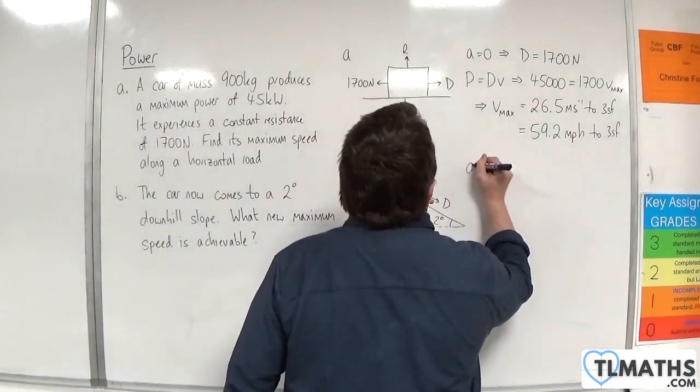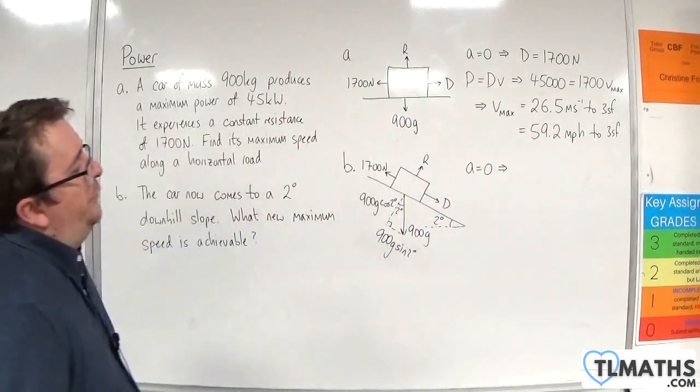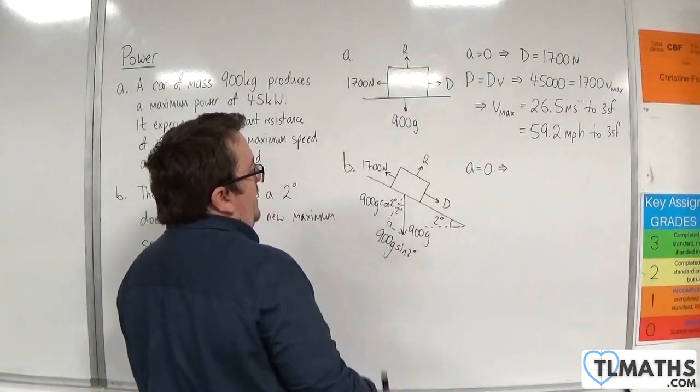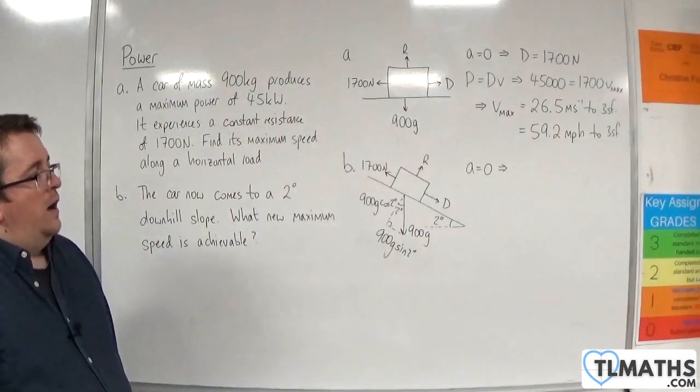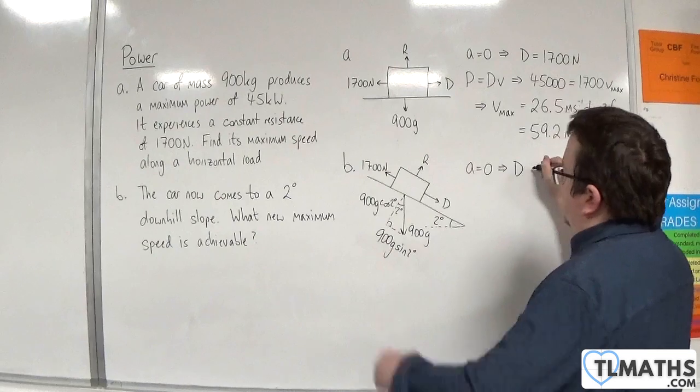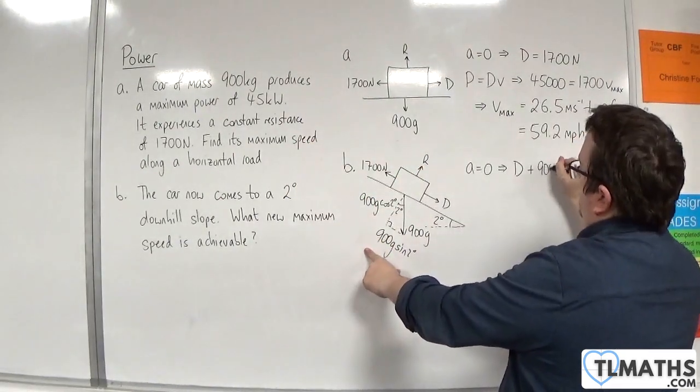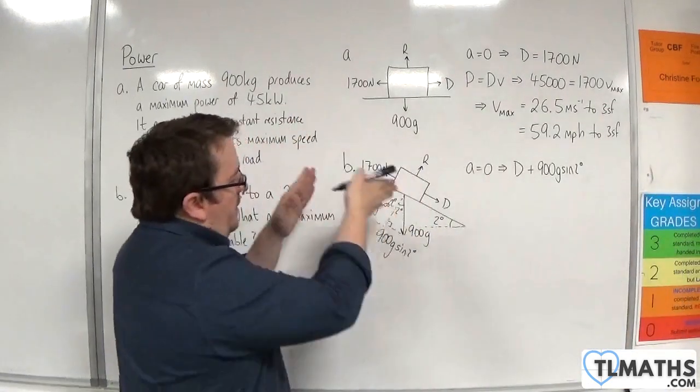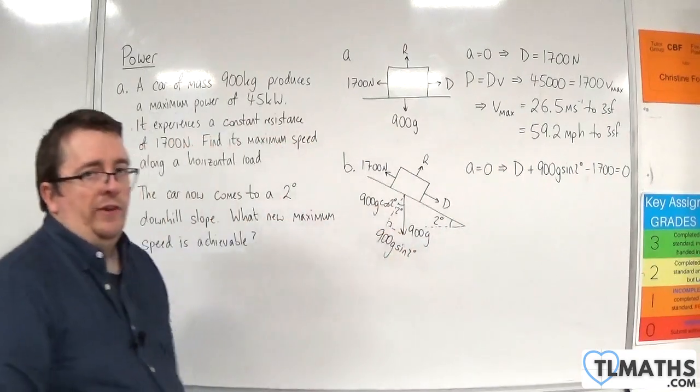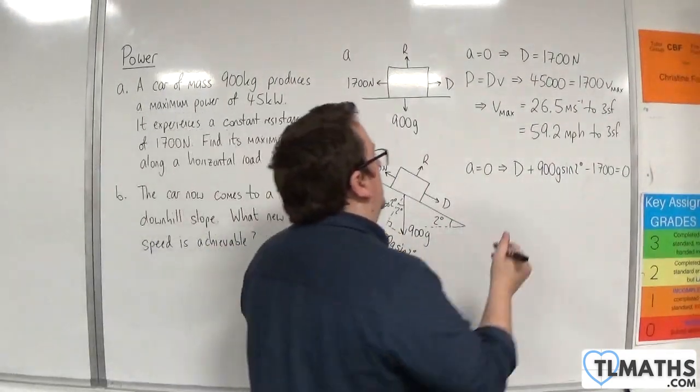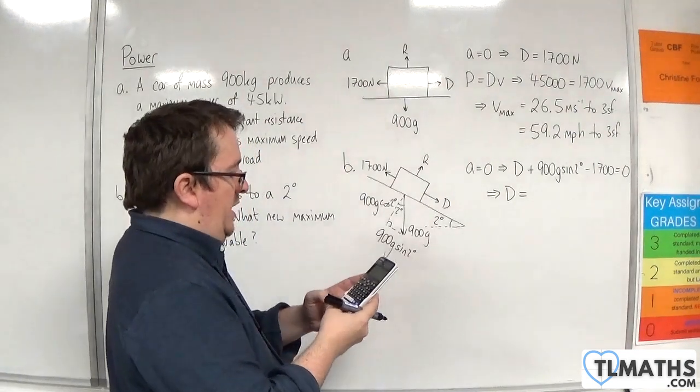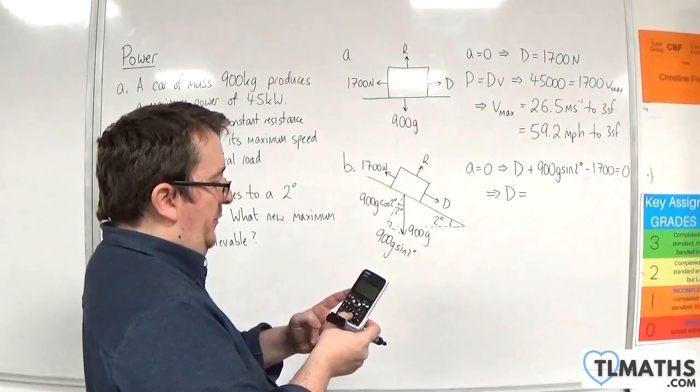So the acceleration is equal to zero. We're still looking at maximum speed here. So I'm going to resolve down the slope. It's not just that D is equal to 1700 again, because we've got the weight acting in that direction as well. So working down the slope, we've got D plus the 900 G sine of two degrees. So they're the two forces acting down the slope. Take away the 1700 is equal to the mass times the acceleration, which is zero.